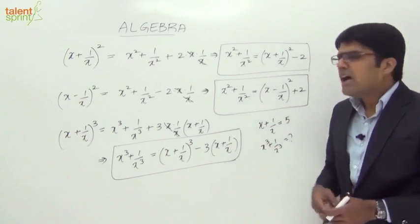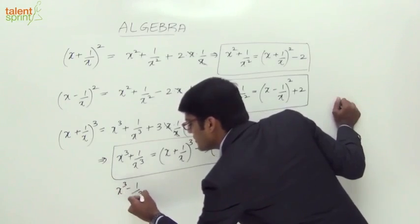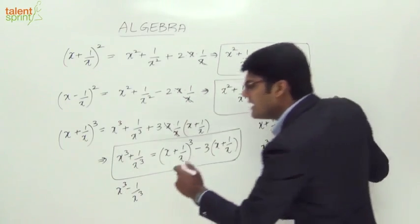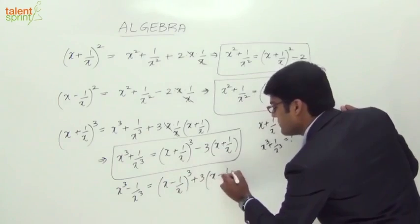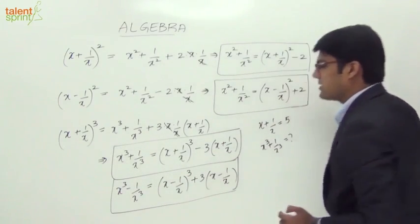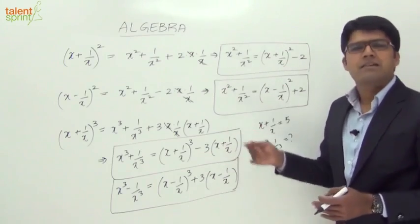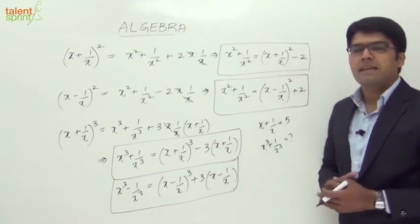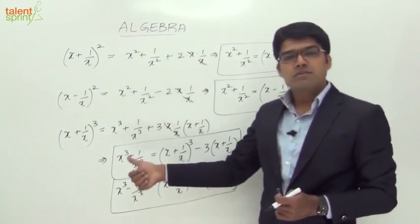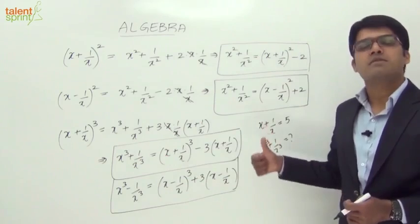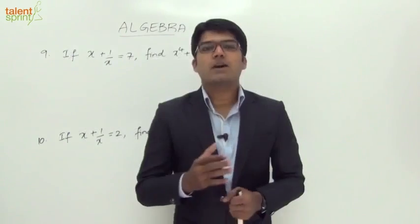In a similar form, we can say x³ - 1/x³: if x - 1/x is given and we need x³ - 1/x³, then x³ - 1/x³ equals (x - 1/x)³ + 3(x - 1/x). These four standard identities will help us solve questions much faster: x² + 1/x² = (x + 1/x)² - 2 or (x - 1/x)² + 2; x³ + 1/x³ = (x + 1/x)³ - 3(x + 1/x); and x³ - 1/x³ = (x - 1/x)³ + 3(x - 1/x).